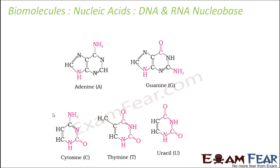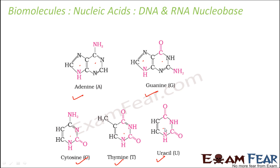Let us quickly look at the DNA and RNA nucleobases. A nucleobase is adenine, guanine, cytosine, thymine, and uracil. Adenine and guanine are double-ring structures called purines. Cytosine, thymine, and uracil are single-ring structures called pyrimidines. Please have a look at their structures as that might help you.